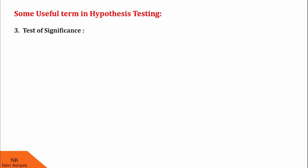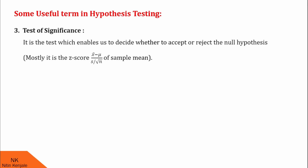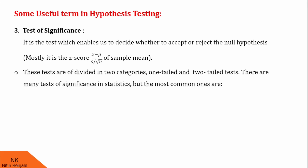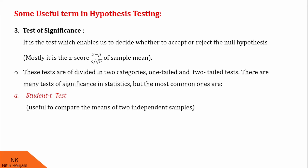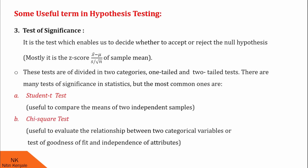Now let us proceed for the next term, which is test of significance. It is the test which enables us to decide whether to accept or reject the null hypothesis. Mostly, it is the test score given by x-bar minus mu upon s upon under root n of sample mean. These tests are divided into two categories: one-tailed and two-tailed test. The most common tests of significance are the Student t-test, which is useful to compare the means of two independent samples, and the chi-square test, which is useful to evaluate the relationship between two categorical variables or test goodness of fit and independence of attributes.